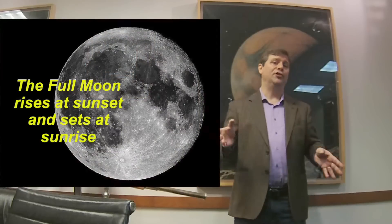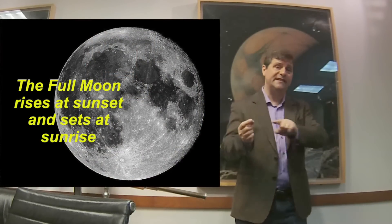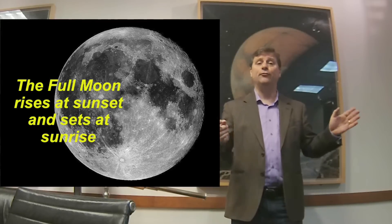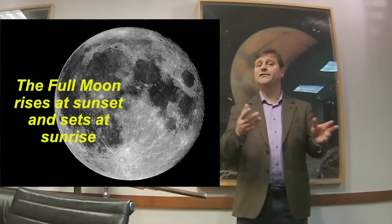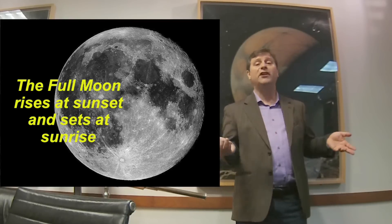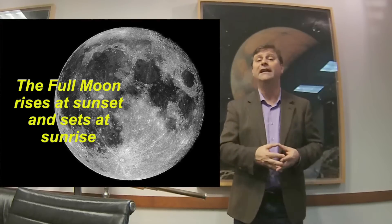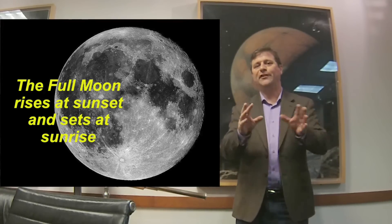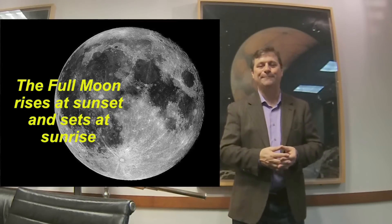The full Moon is different. Since it's exactly opposite the Sun in the sky, it rises at sunset and sets at sunrise — so it's up all night. Everybody finds it wonderful to go outside and look at the full Moon, and everyone has wonderful superstitions about it.